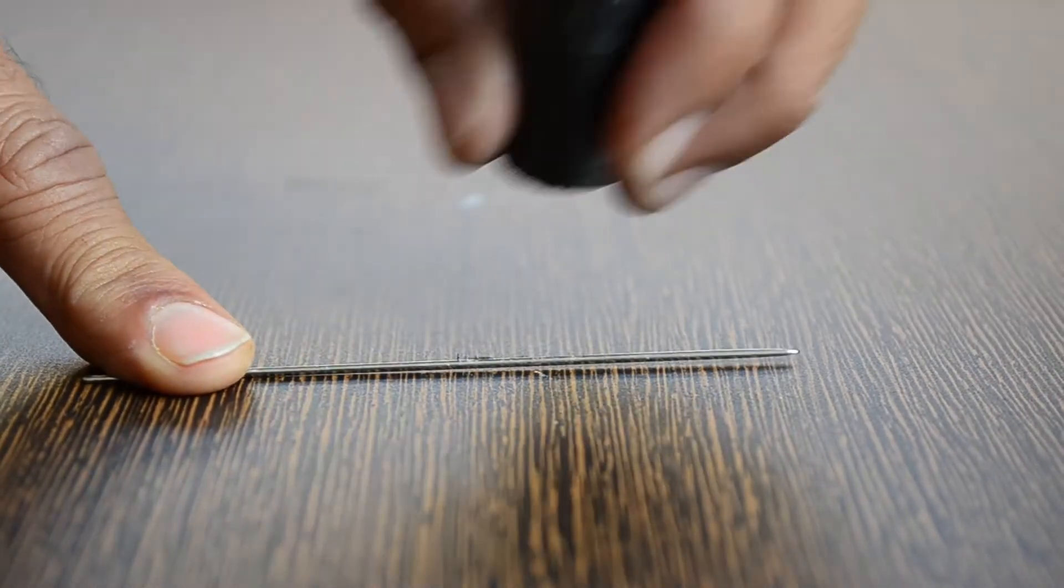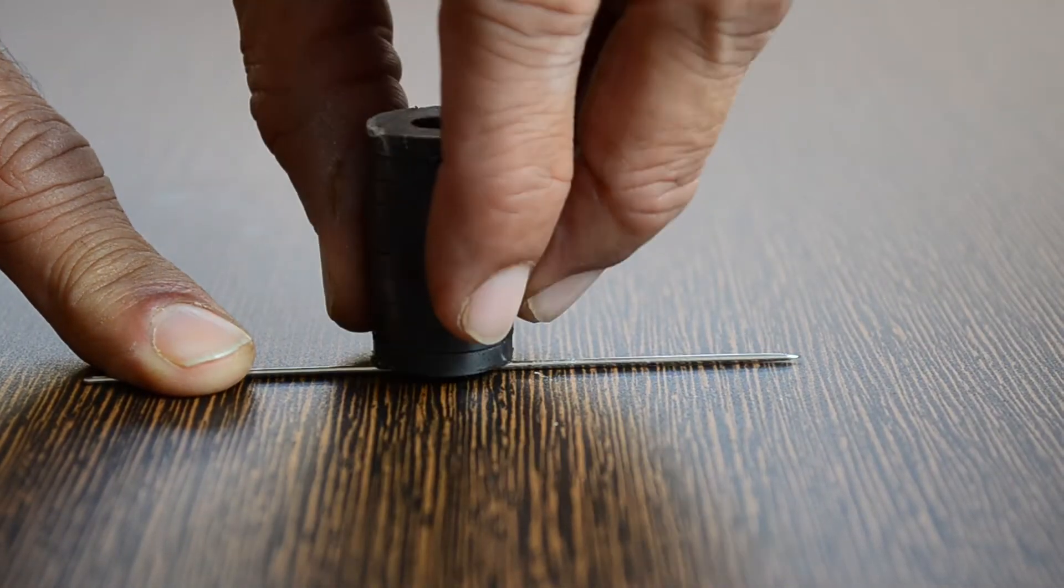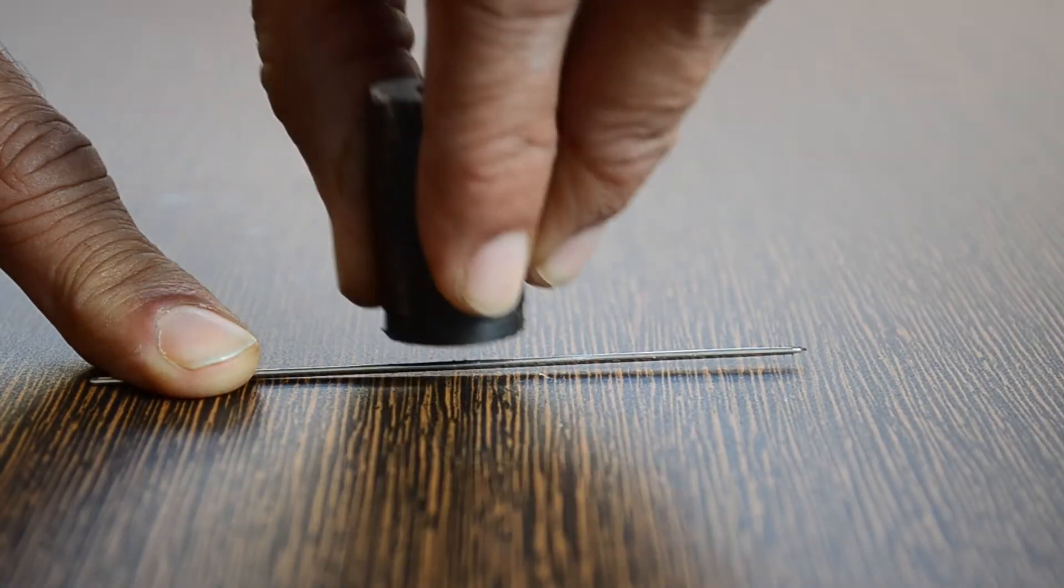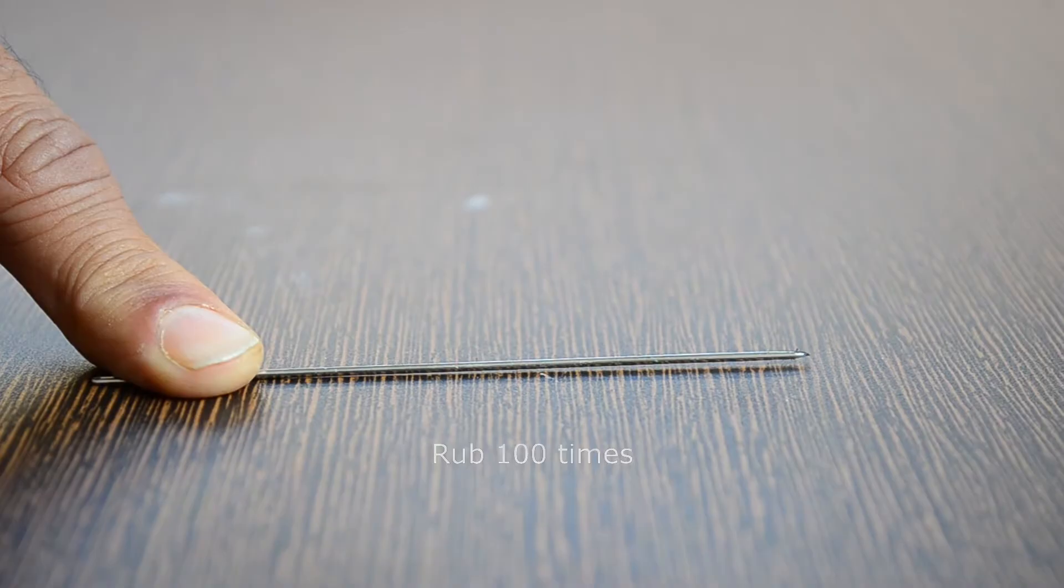We will hold the needle in place with one hand. The magnet is rubbed with the other hand by sliding the south pole from the hole of the needle to the pointed end of the needle.